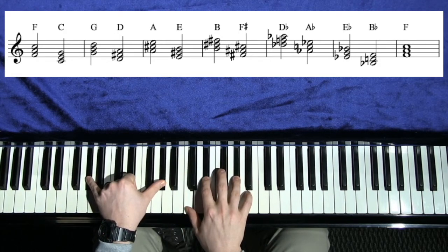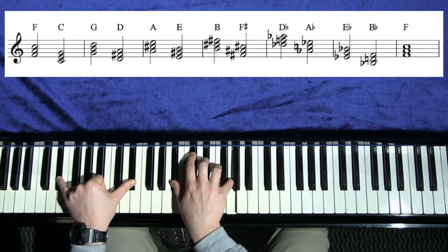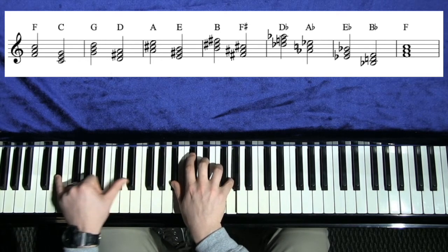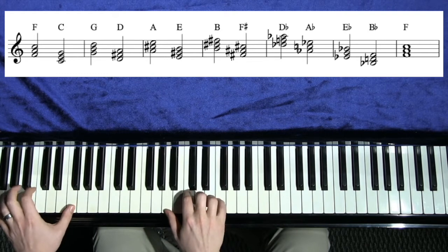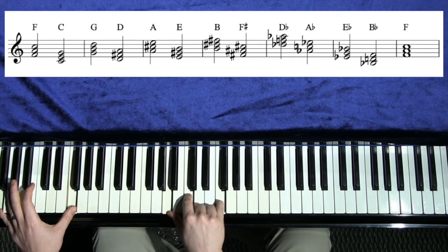We're just going around the circle of fifths backwards, down a fourth goes to E flat, down a fourth goes to B flat, down a fourth goes back to F. So that was one lap around the cycle.